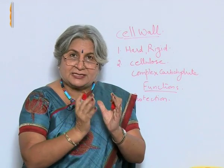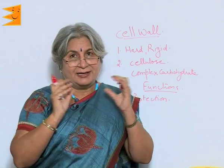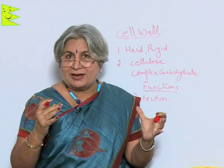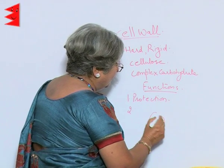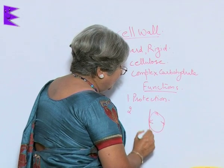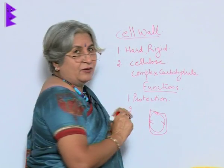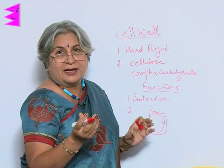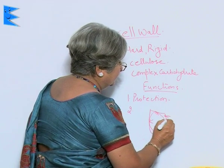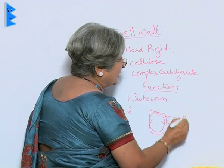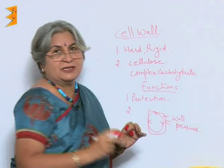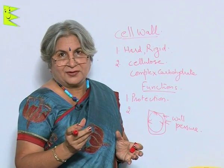When plant cells are in a hypertonic medium, water enters the cell and the cell swells, putting pressure on the cell membrane. But when there is a cell wall around it, the cell wall exerts back wall pressure, and this helps in the prevention of bursting of the cell.